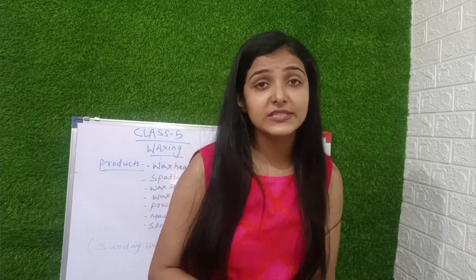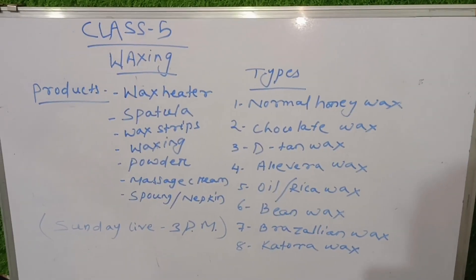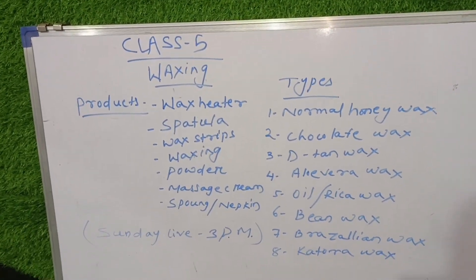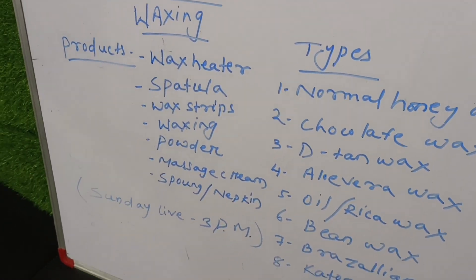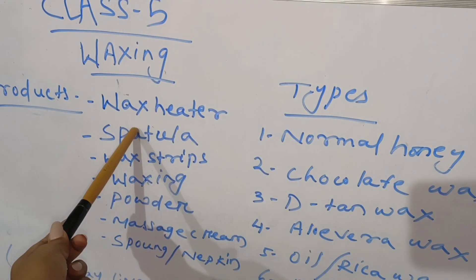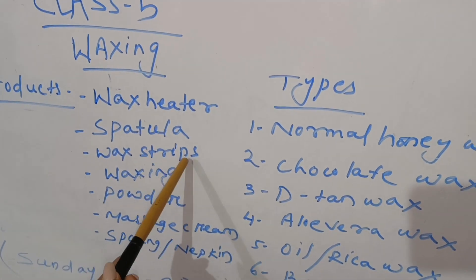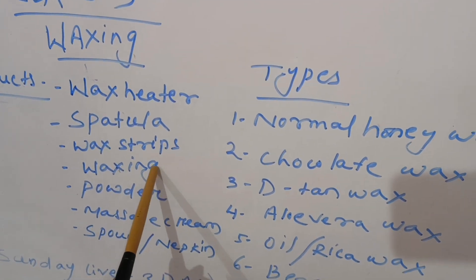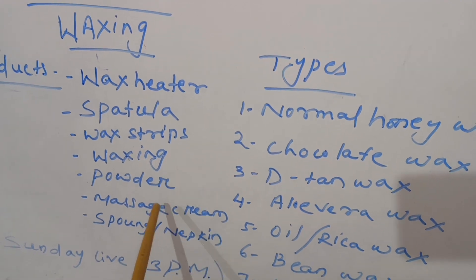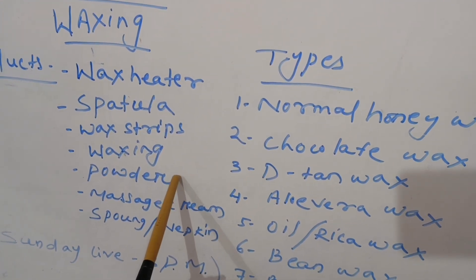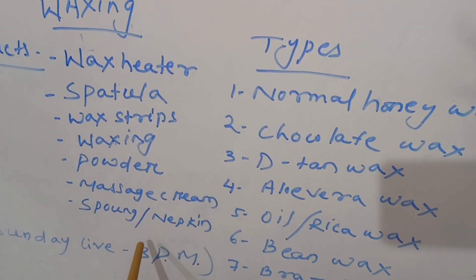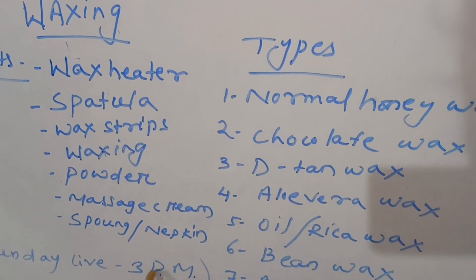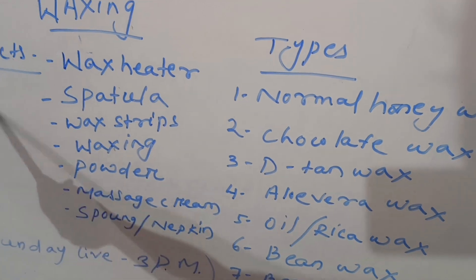I will tell you what tools you will need for waxing. First, you will need a wax heater, spatula, and wax strips. There are many varieties of waxing products. You can also use a loose powder, like a ponds or talcum powder. You can also use a massage cream and a sponge or napkin. These are all the necessary products for waxing.